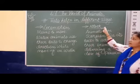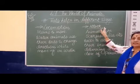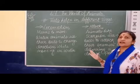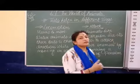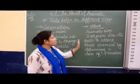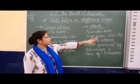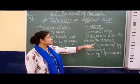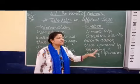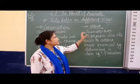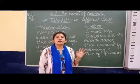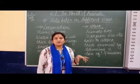Next topic is attack. The tail helps animals in this function as well. Animals like scorpions use their tail to attack other animals by delivering a dose of poison. That means the tail helps them to protect themselves from enemies.